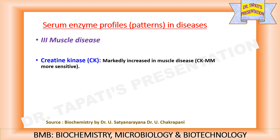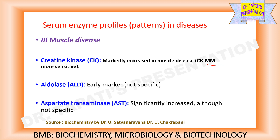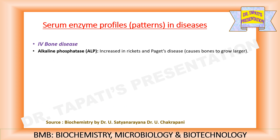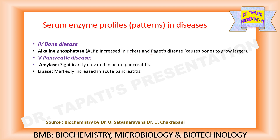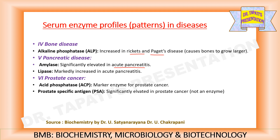In muscle disease, creatine kinase is increased which is more sensitive. Aldolase activity is increased and is an early marker but not specific for muscle disease. Aspartate transaminase is significantly increased in muscle disease although it is not specific. Alkaline phosphatase level is increased in Rickets and Paget's disease. Both amylase and lipase activities are increased in acute pancreatitis. Level of acid phosphatase is increased in prostate cancer. PSA is also significantly elevated in prostate cancer but it is not an enzyme.